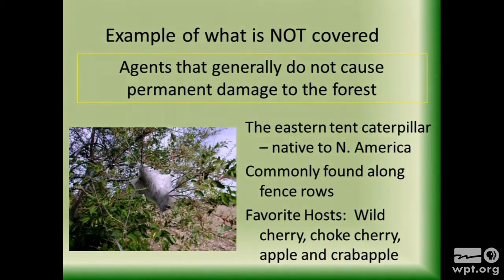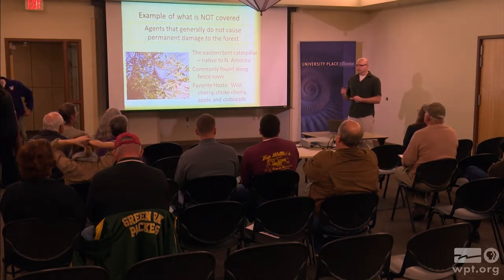Some of the things we're not going to talk about are the insects and diseases that are very common in our woods, that are out there all the time and don't really cause a problem. The Eastern Tent Caterpillar is a good example — it's common in Wisconsin's forests and will eat a lot of leaves, but it's not as bad as gypsy moth, emerald ash borer, or oak wilt. Native predators do a good job controlling those populations. But the things that are really bad — the ones with no natural predators — are what we're going to talk about tonight.